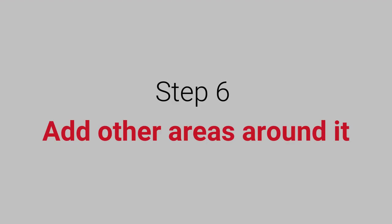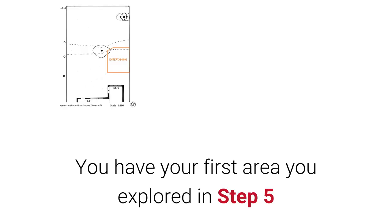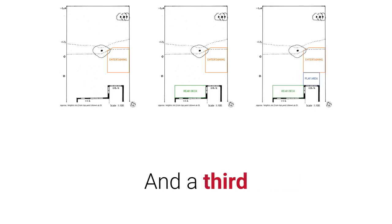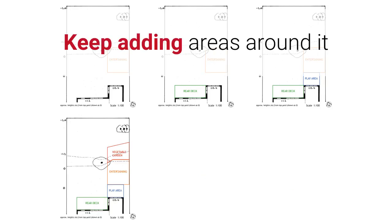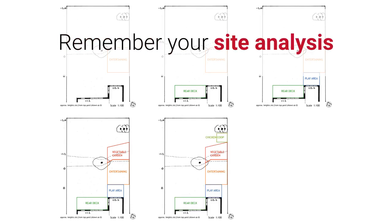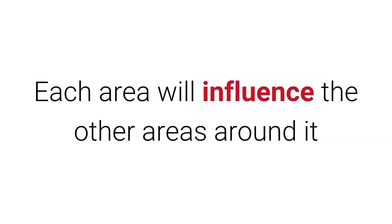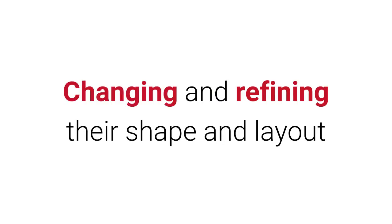Step 6: Add other areas around it. The following sketches merely outline what possible positions certain activities or ideas can go — your sketches should be much quicker and a lot rougher. So, you have your first area that you explored in step five. Choose another one and add it in, then add a third. Keep adding areas around it, and remember your site analysis to help inform where an area can go. Each area will influence the other areas around it, changing and refining their shape and layout.